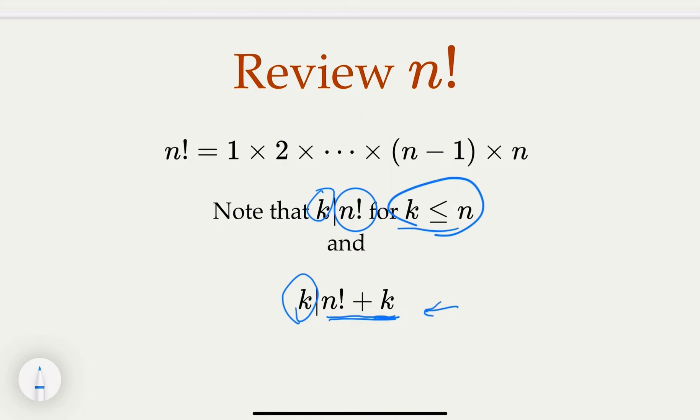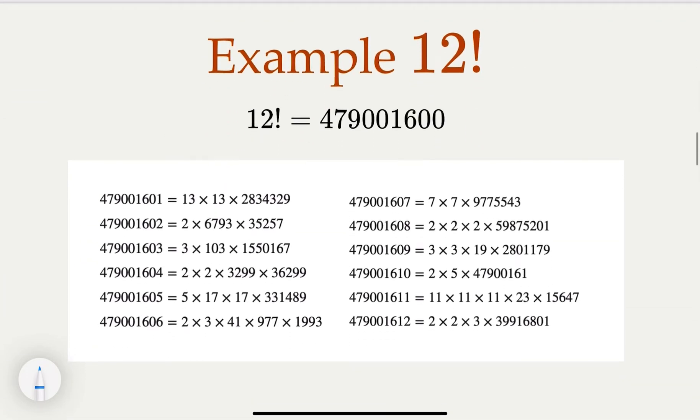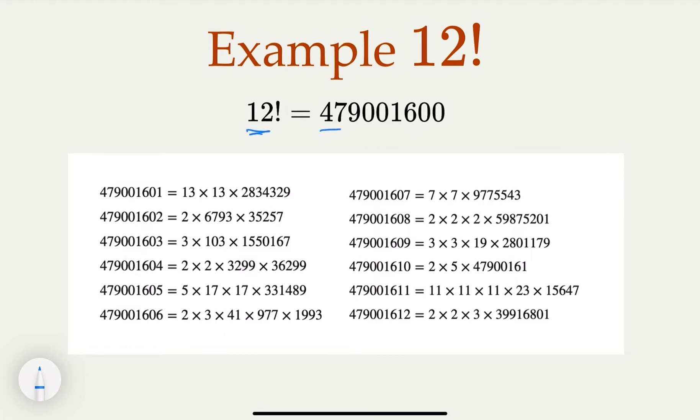These are all composite numbers, and they're consecutive. In other words, given n, we can construct n consecutive composite numbers. For example, let's say n equals 12. I use a program to factor—12 factorial is this big number here. You add 2, 3, up to 12, and you get these 12 numbers. They're all composite, and this shows their prime factorization.